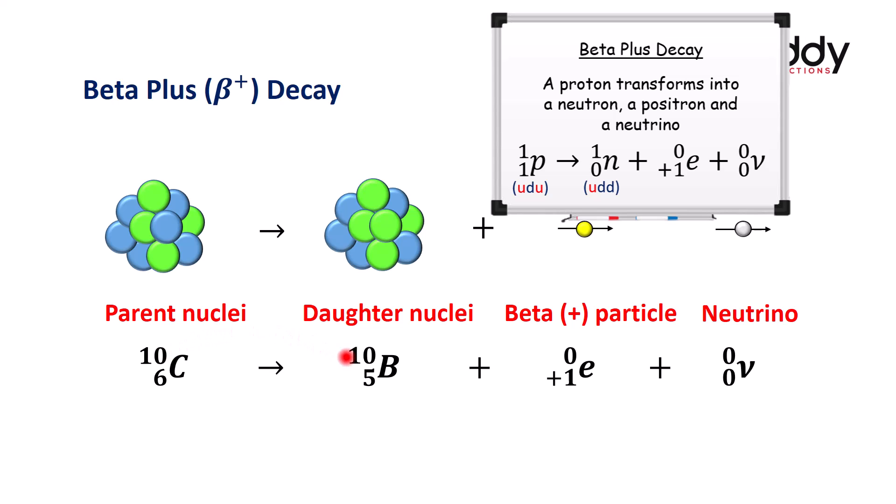What is occurring is a proton, which is made up of two up quarks and one down quark, is changing into a neutron, which is made of an up quark and two down quarks. This changing quark is a result of the weak nuclear force. In addition to this transition from a proton to a neutron, a positron is generated as is a neutrino.